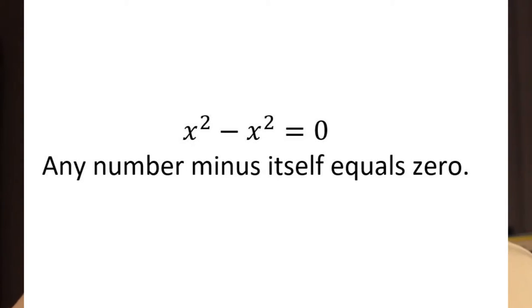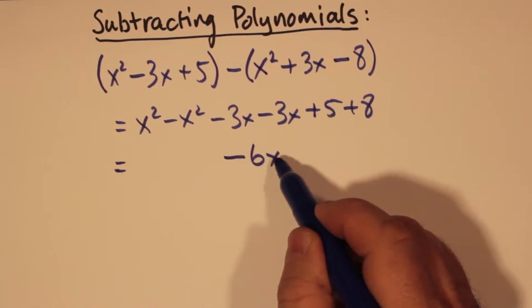That's why x squared minus x squared is 0. Negative 3x minus 3x, that's like 2 times negative 3x. That's minus 6x.